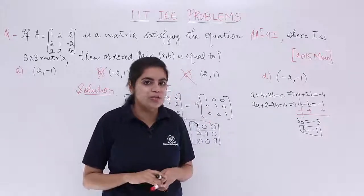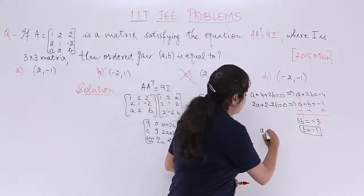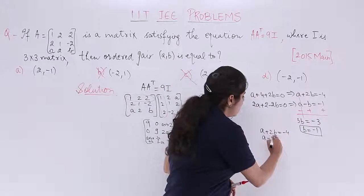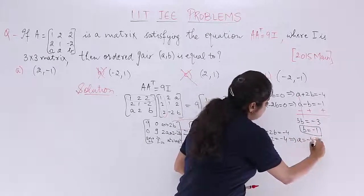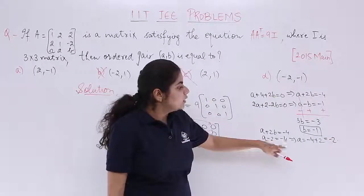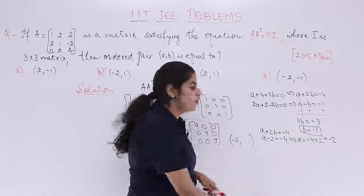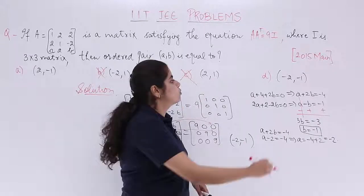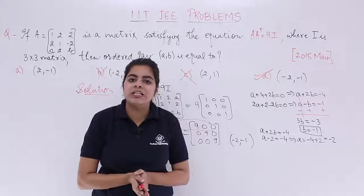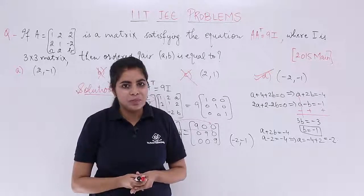Let's check the value of A also to remove the confusion. You put the value of B in any of the above equations. Suppose I put it in A plus 2B is equal to minus 4. What is the value of B? It is minus 1. So it is A minus 2 is equal to minus 4. What is A? Minus 4 plus 2. And it is what? It is minus 2. So the value of A is minus 2. So the ordered pair becomes AB: minus 2 and the value of B is minus 1. So the answer is minus 2, minus 1, which is option number D. So this was a question asked in the year 2015 in IIT JEE examination, and the answer of this question is the ordered pair minus 2, minus 1.